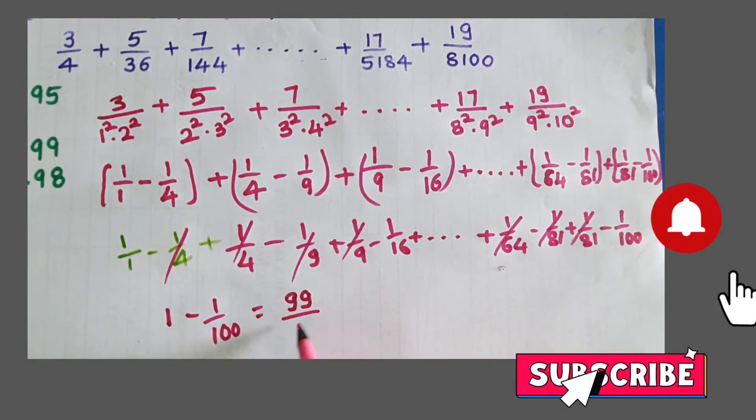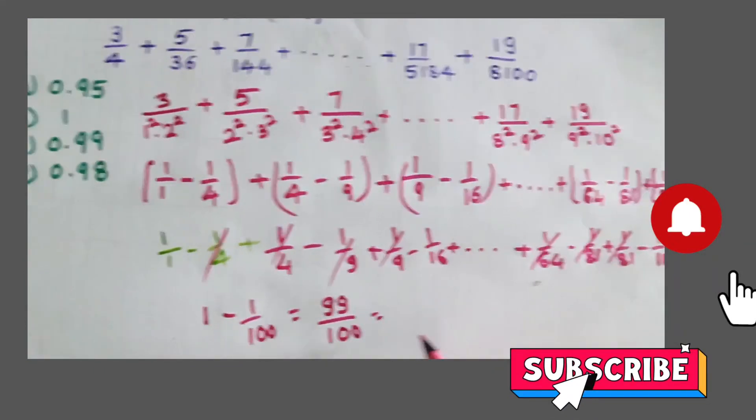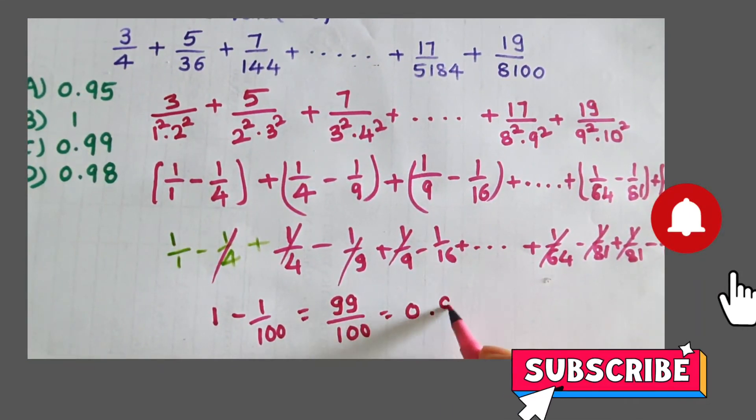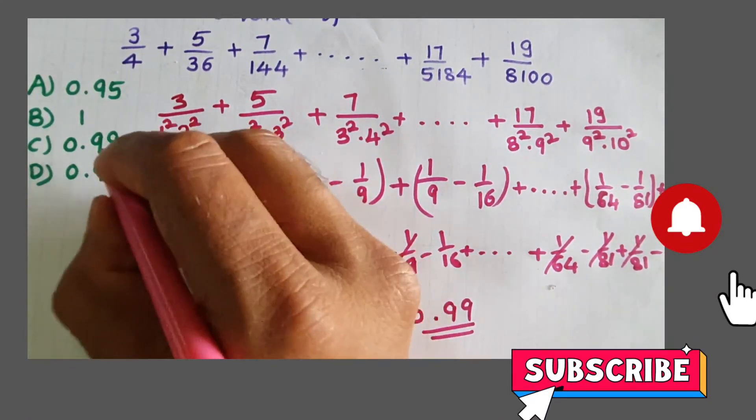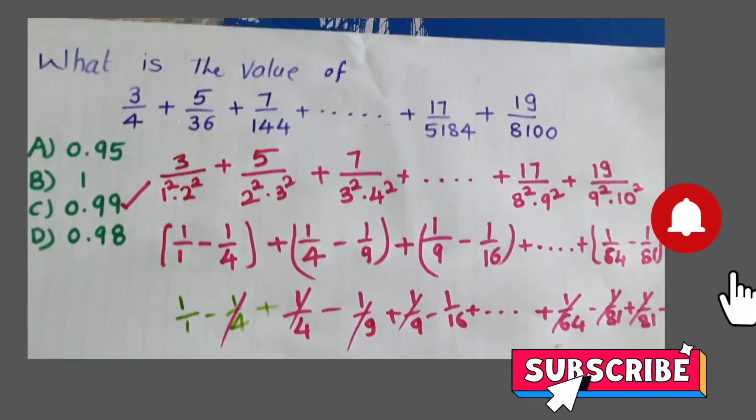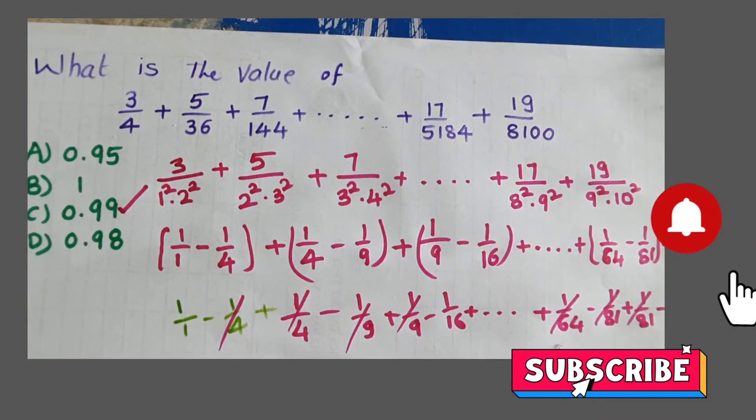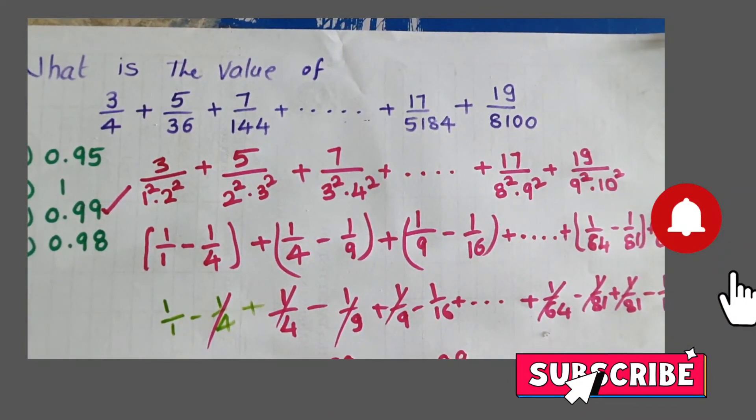We're left with 1 minus 1 by 100, so that equals 99 by 100, which equals 0.99. So option C is the correct option.